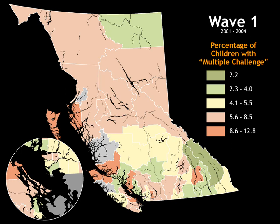The dark green areas show only 2.2 percent of children with multiple challenges. The light green areas show between 2.3 and 4 percent. The yellow areas show 4 to 5.5 percent. The light reddish brown areas show 5.6 to 8.5 percent. And the dark reddish brown areas show 8.6 to 12.8 percent of children with multiple challenges, for an overall provincial level of 5.4 percent.